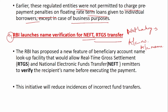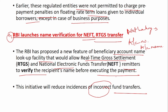RBI has proposed a new feature called the Beneficiary Account Name Lookup Facility that would allow RTGS and NEFT remitters to verify the recipient's name before executing the payment. This initiative will reduce the incidence of incorrect fund transfers.